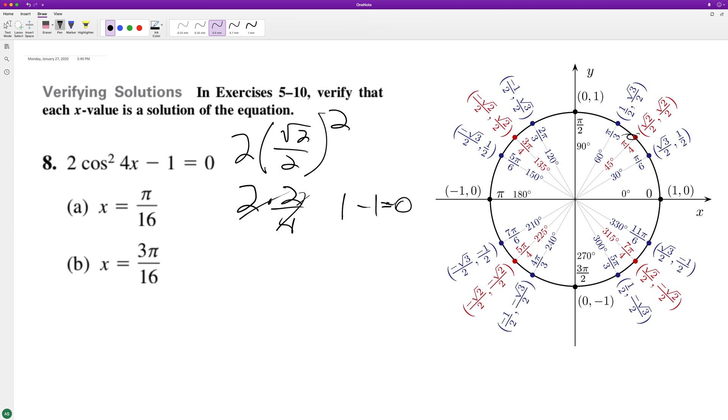What about 3π/16? If we multiply this by 4, we get 12π/16 which reduces down to 3π/4, right here. So we're using the x component.